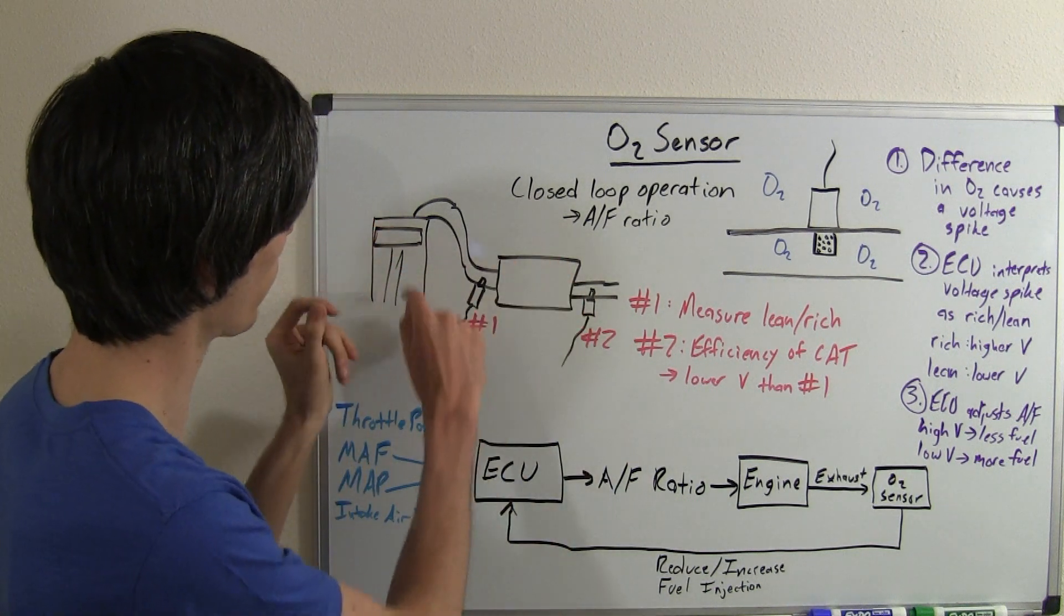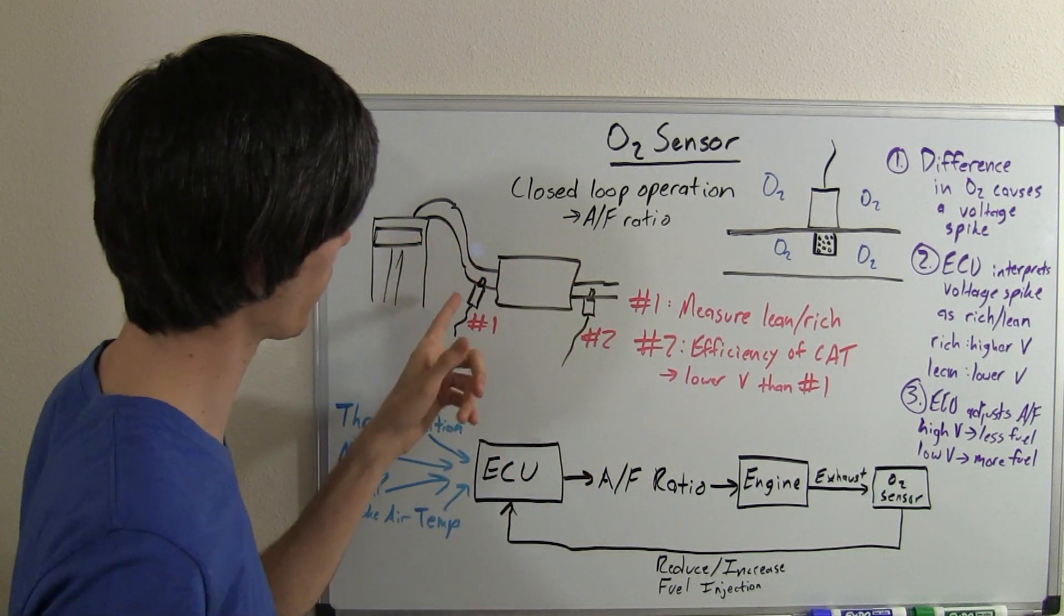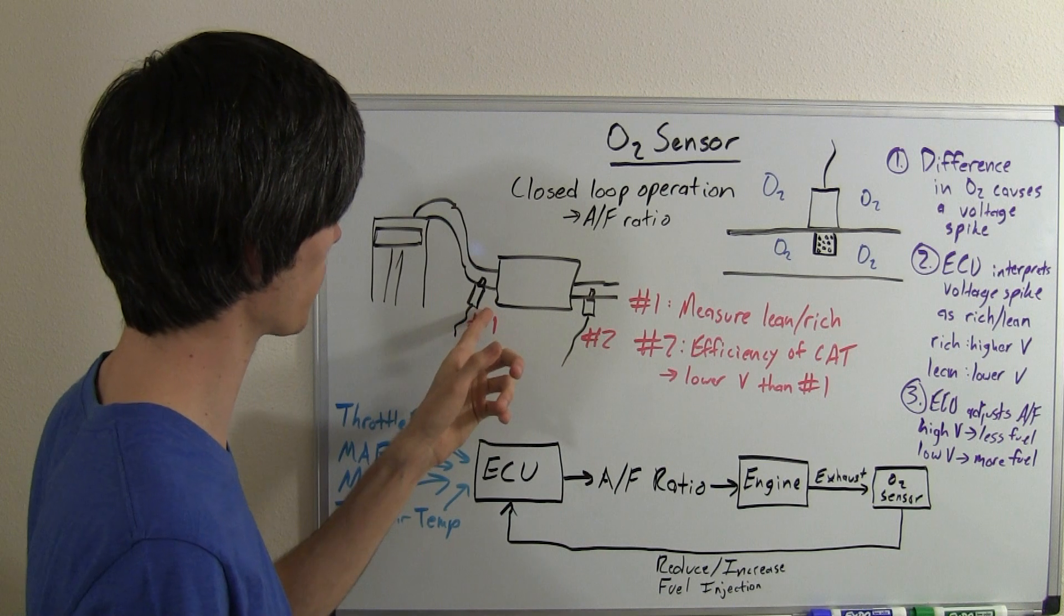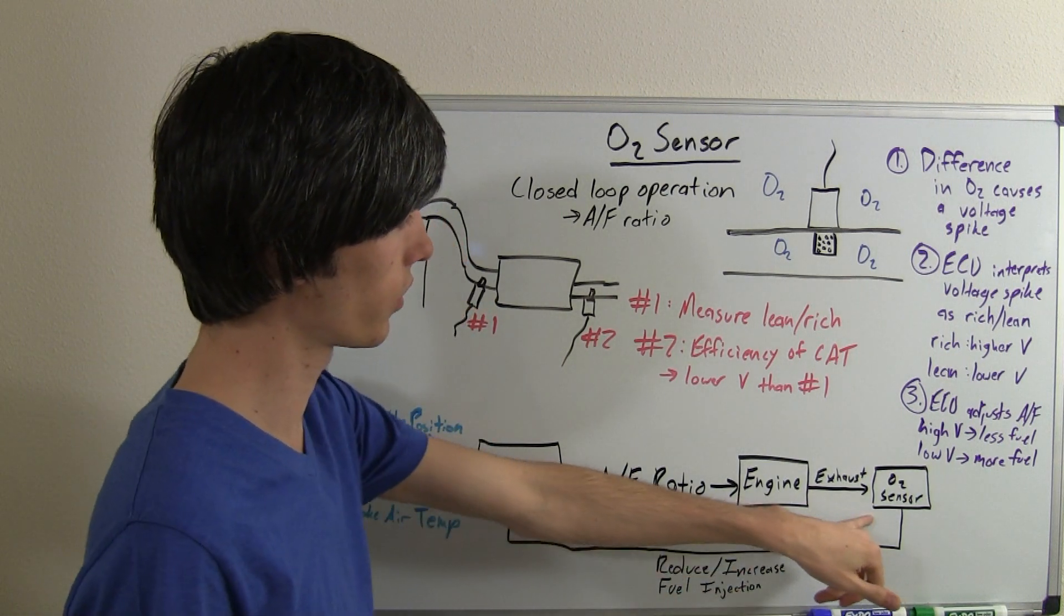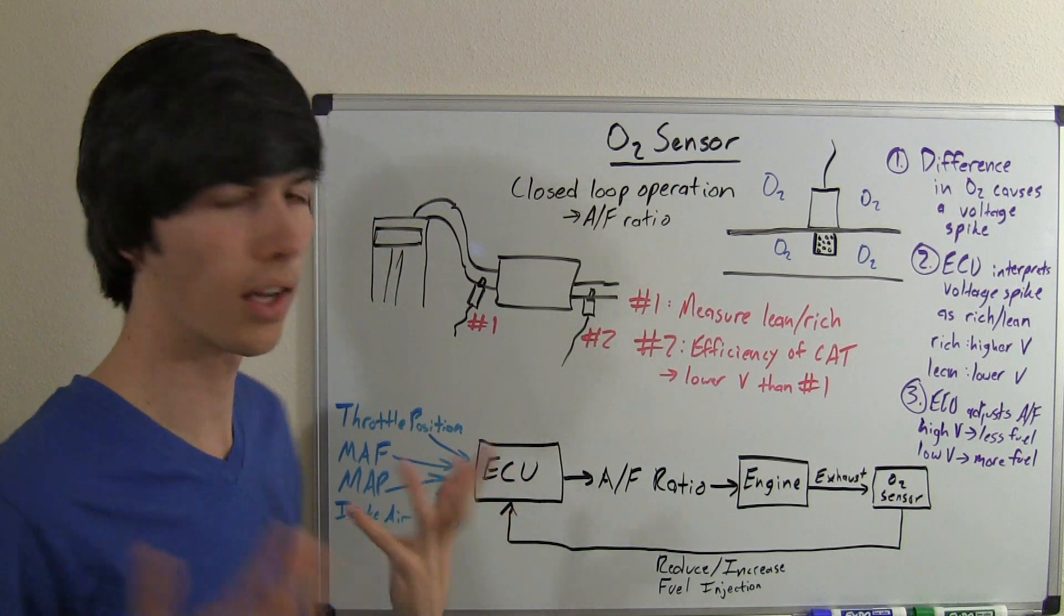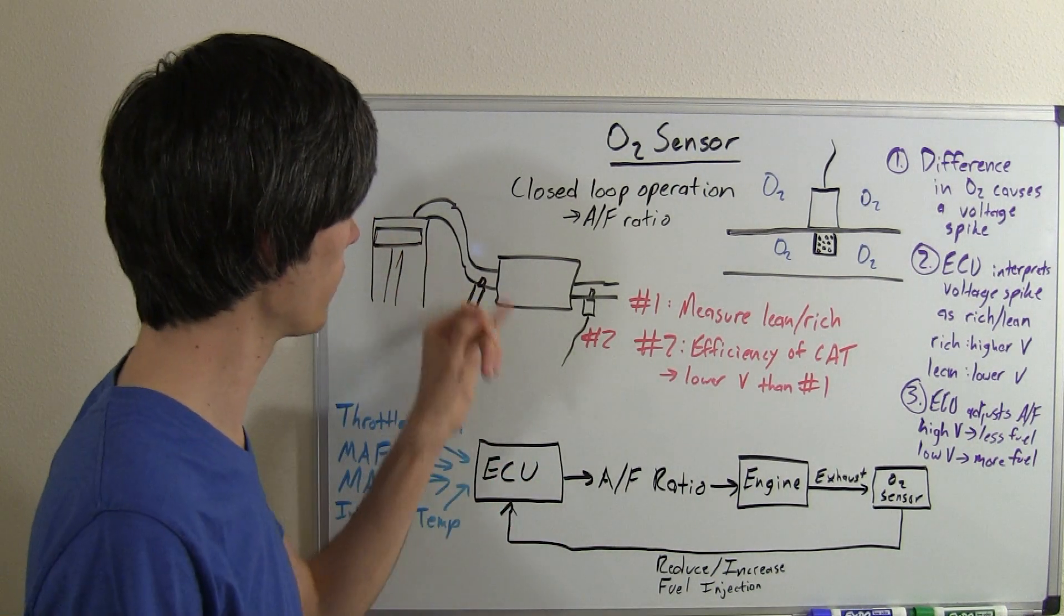So here's your basic setup. Your exhaust comes out and the first thing, one of the first things the exhaust is going to come into contact with is going to be this first oxygen sensor. What that oxygen sensor is going to do is see if there's any oxygen left in the exhaust.